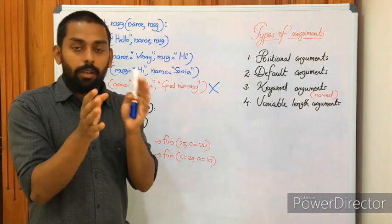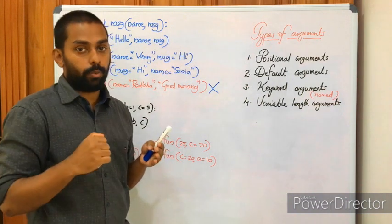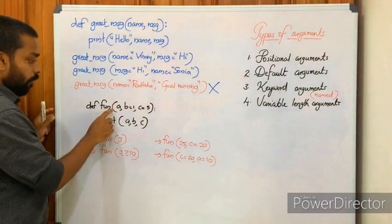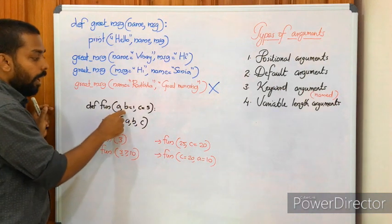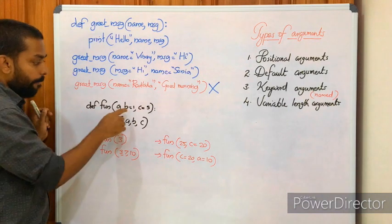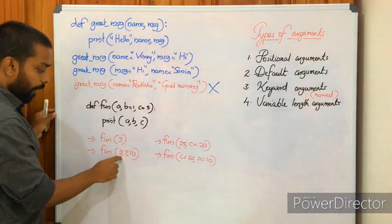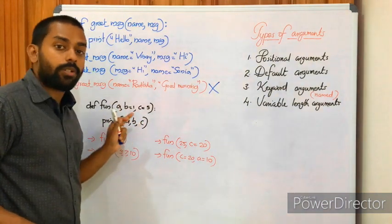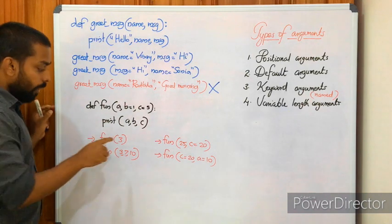Let's see some variations of keyword arguments. We have a function fund(a, b=1, c=5) with three formal parameters. Here a is a normal parameter, but b and c are default parameters — b with value 1 and c with value 5. We are printing a, b, and c. We have four function calling statements: fund(3), fund(3, 7, 10), fund(25, c=20), and fund(c=20, a=10).